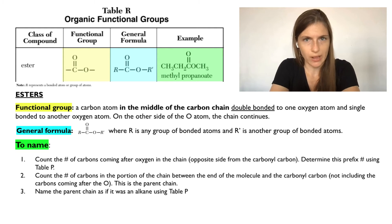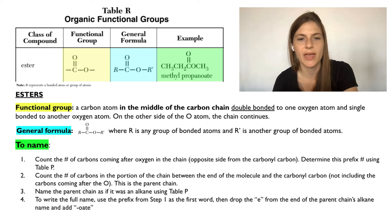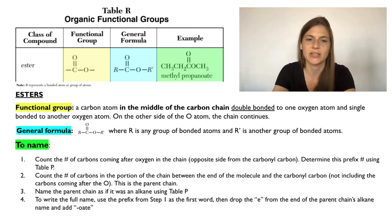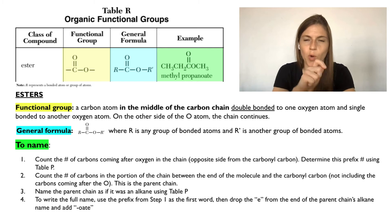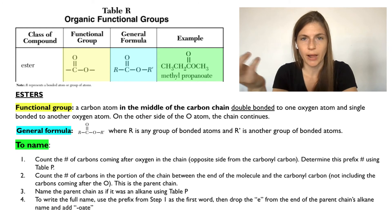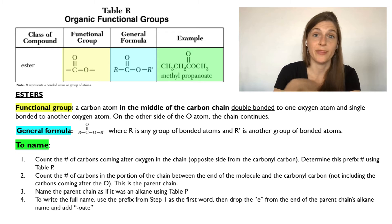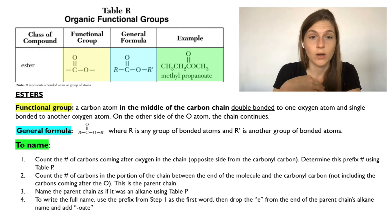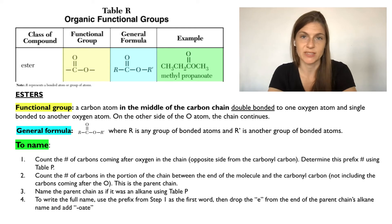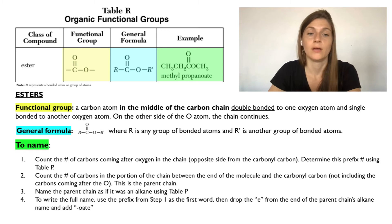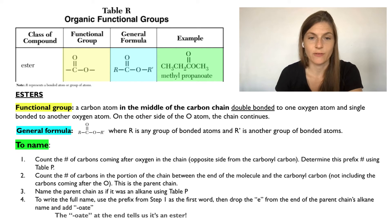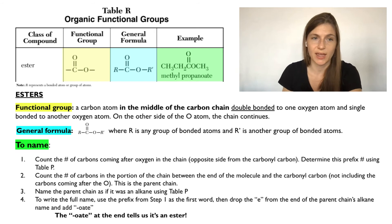Name the parent chain as if it was an alkane using Table P. To write the full name, use the prefix from the first step and add "-yl" to the end as the first word — so methyl or propyl. Then for the second word, take the name of the parent chain's alkane, drop the E, and add "-oate" as the suffix. So propane becomes propanoate. This "-oate" ending tells you that you have an ester.